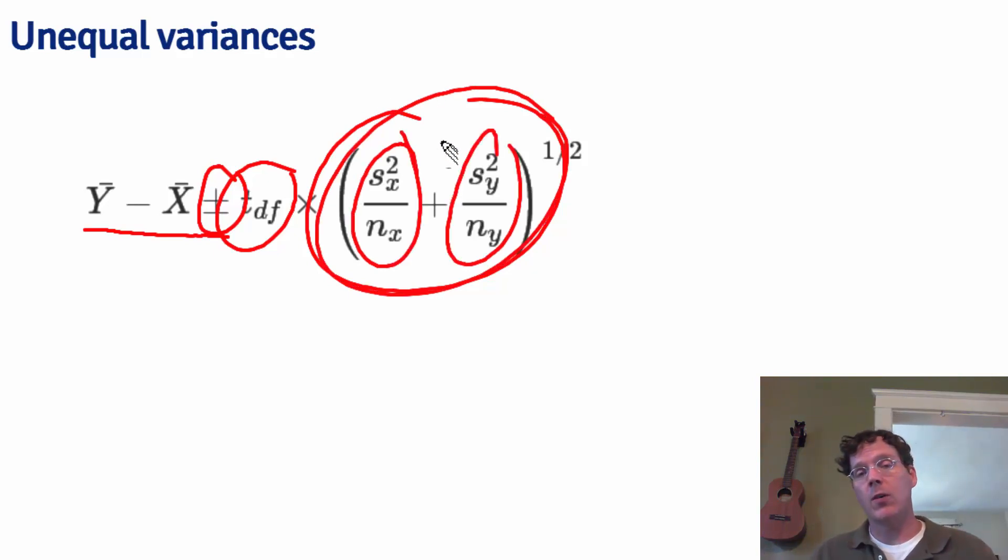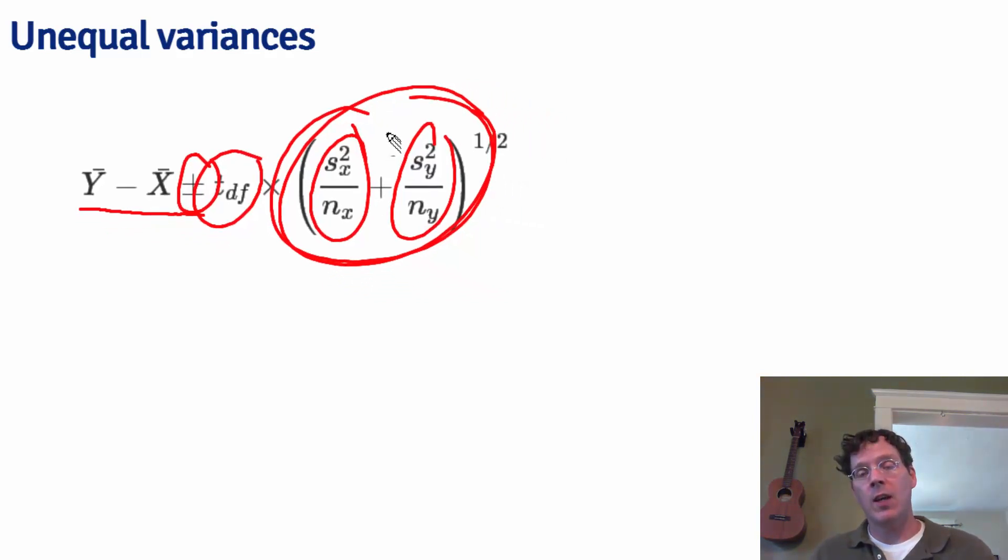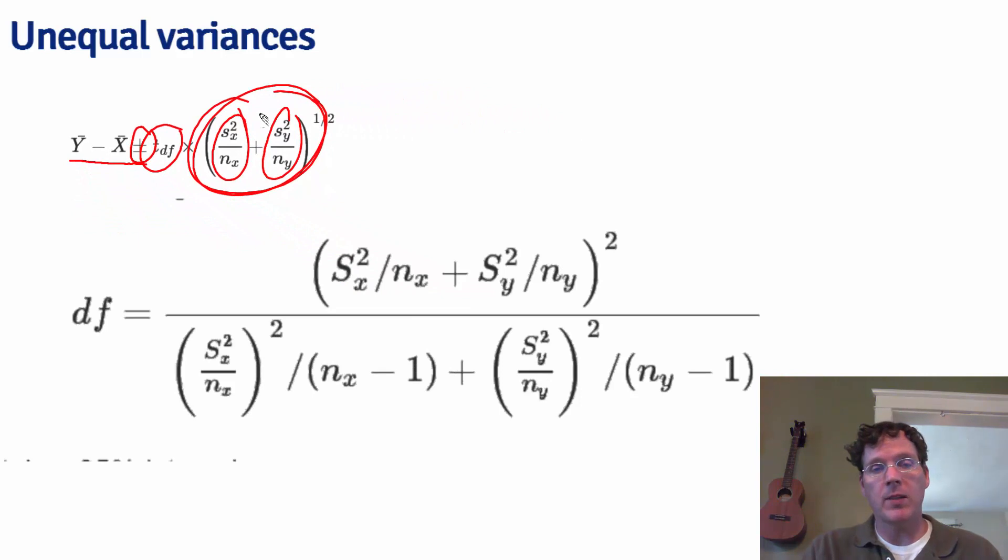It turns out that if the x observations and the y observations are iid normal, potentially with different means and potentially with different variances, the relevant normalized statistic does not follow a t-distribution. Instead, it can be approximated by a t-distribution where we choose a rather elaborate formula for the degrees of freedom.